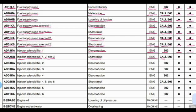Code ADB1KA: the part is injector solenoid number 2 and the problem is disconnection. Controller is the engine controller. Action code E02. Lamp will blink and buzzer is beeping.